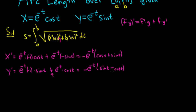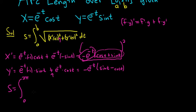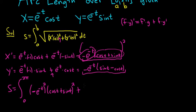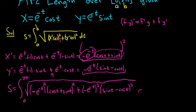Now the messy part — we're going to take these and plug them into S. So it's going to be the integral from 0 to 2π. We're squaring x prime: negative e to the negative t times (cosine t + sine t), quantity squared. Plus y prime squared: e to the negative t times (sine t − cosine t), quantity squared. All under a giant square root, then dt.